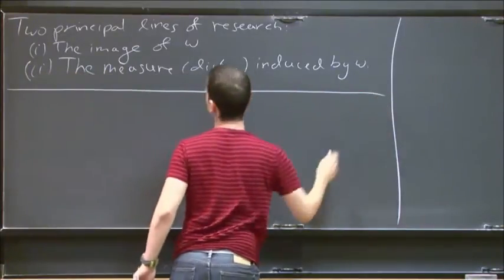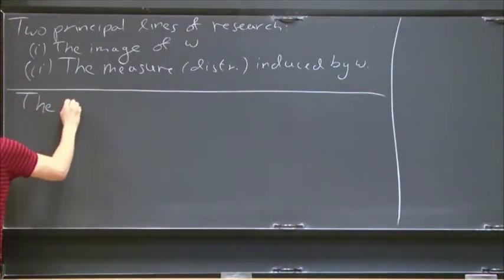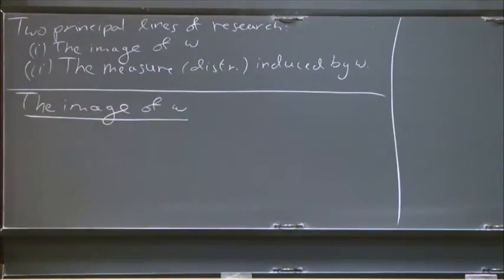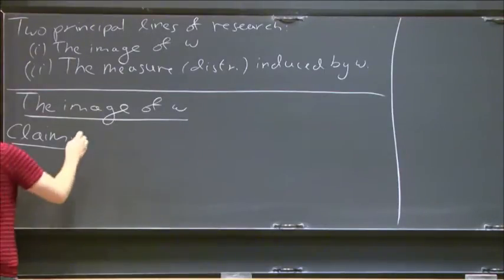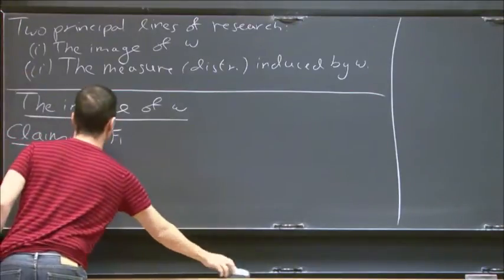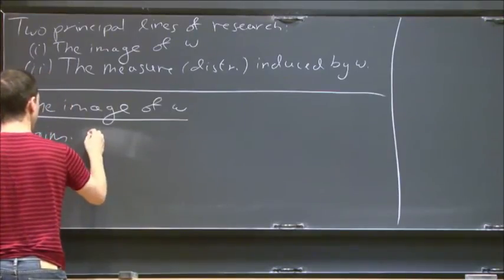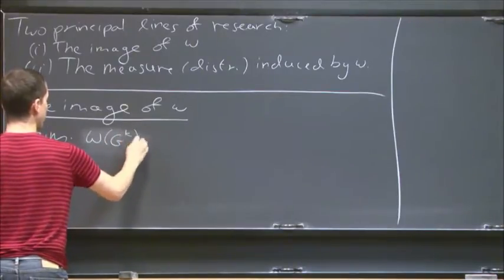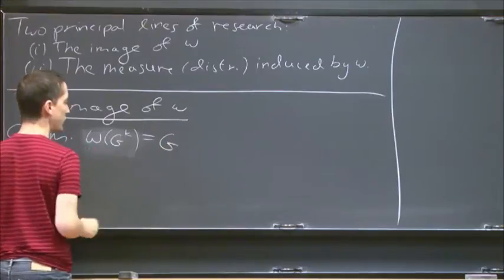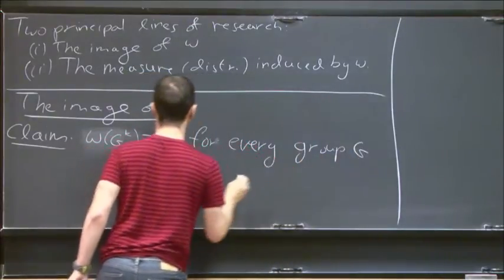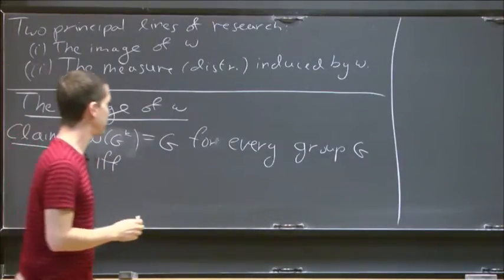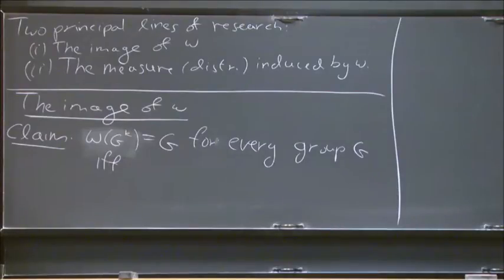Let's start with the image of w - just a few words about that. We'll start with an easy claim. The claim is about which words are always onto. We say that w of G to the k equals G - the entire group - for every group G, if and only if... but before I state the answer, let's look at some examples. Let's look at some examples and you tell me if they are always onto or not.